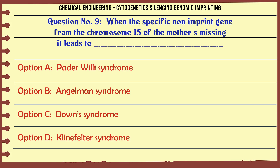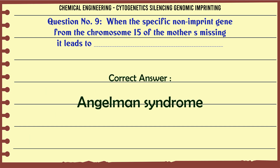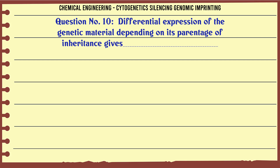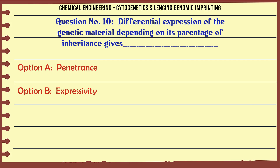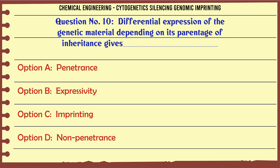When the specific non-imprinted gene from chromosome 15 of the mother is missing, it leads to: A. Prader-Willi syndrome, B. Angelman syndrome, C. Down syndrome, D. Klinefelter syndrome. The correct answer is B: Angelman syndrome.